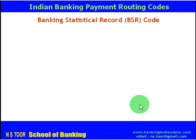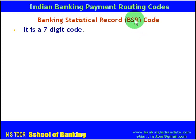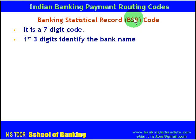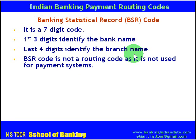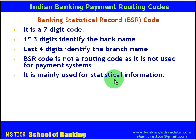Now the BSR code — Banking Statistical Record code. The BSR code is a seven-digit code. The first three digits identify the bank name, and the last four digits identify the branch name. However, we must remember that BSR code is not a payment routing code, so it is not used in payment systems. It is used mainly for statistical information.